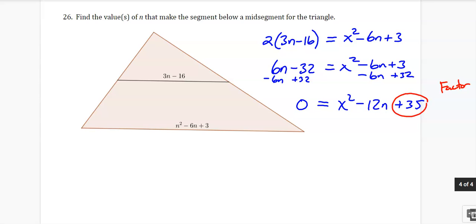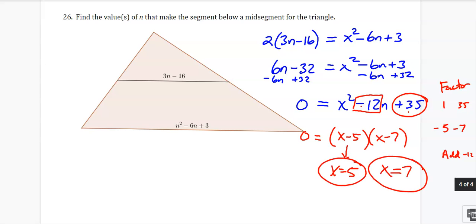Now we play the factor game. Factor game says, how can we get 35? We can do 1 times 35 or 5 times 7. Now we got to do it right because we need to add to get negative 12. So we need to add somehow to get a negative 12. If we do two negatives, it'll times together to be positive 35. It'll add together to be that. So x minus 5, x minus 7. We use our zero product property. So it looks like x could be 5 and x can be 7. So those are your two answers for number 26.